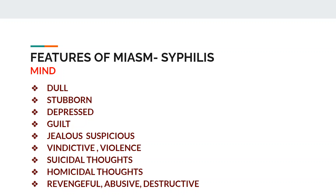The mental symptoms found in the syphilitic miasm patient include dull, stubborn, and depressed states. The depression is of a psychotic type — fully blown. The patient will be cut off from the environment, from food, from family members. The patient will have guilt complex, jealousy, suspicion of very high intensity, hallucinations, vindictive nature — that is malicious and revengeful — and goes into violence. There are suicidal thoughts as well as homicidal thoughts that come into action. The patient is revengeful and abusive.